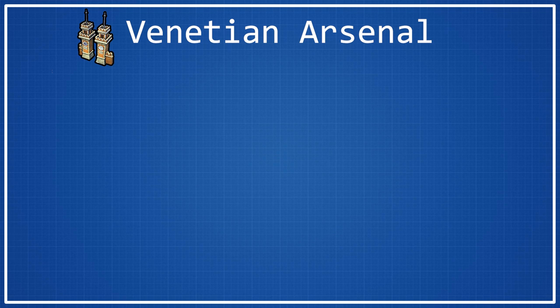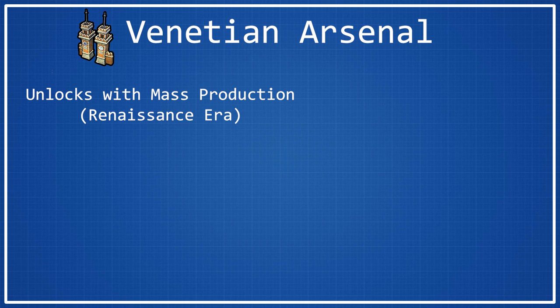To unlock the Venetian Arsenal, all you have to do is research the mass production technology, which makes it a Renaissance-era wonder, just like all the other ones we've been talking about recently.